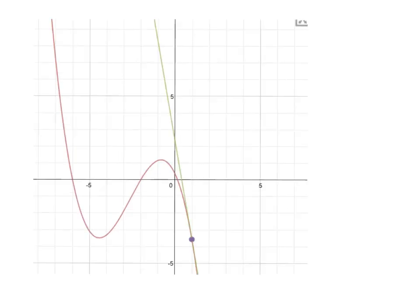Here you'll see that the red curve is the function, the purple dot is the point of tangency, and the green line is the tangent line. Some people describe it as a line that just kisses the function goodbye.